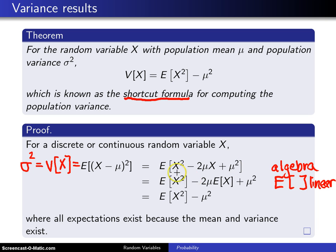Now the expected value of X², you can't do anything with that piece, but on 2μX, it turns out this 2μ is a constant, and you know that constants can get pulled out front of the expected value operator, so you get 2μ multiplied by the expected value of X.